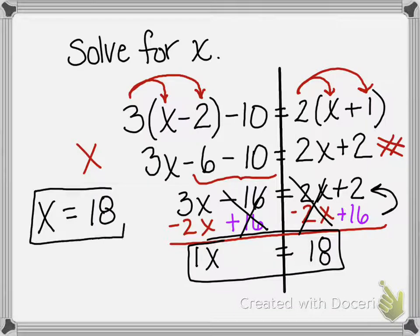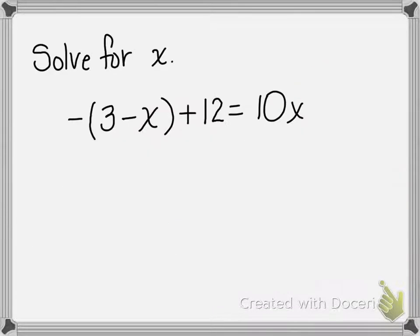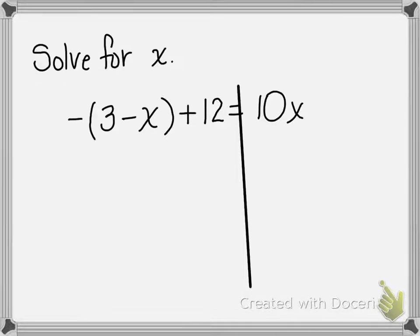Clear your boards, let's go to the next one: -(3 - x) + 12 = 10x. I'm going to draw my line and give you just a minute.